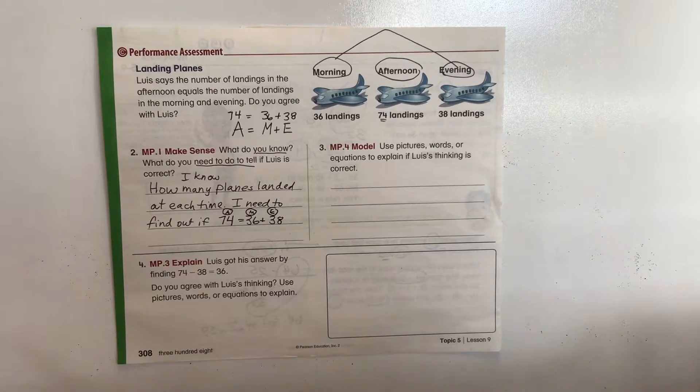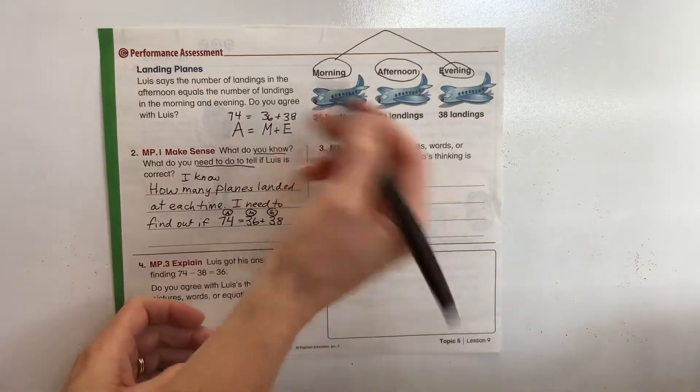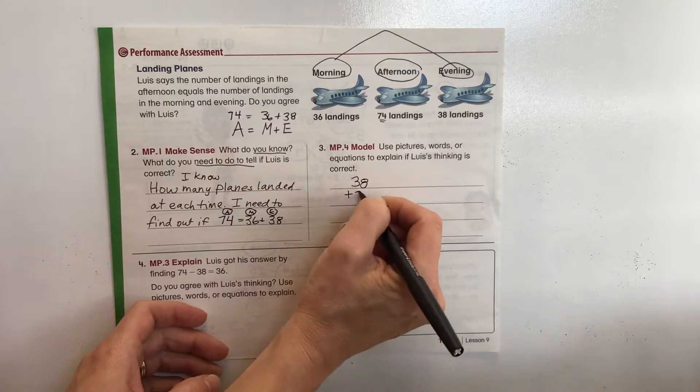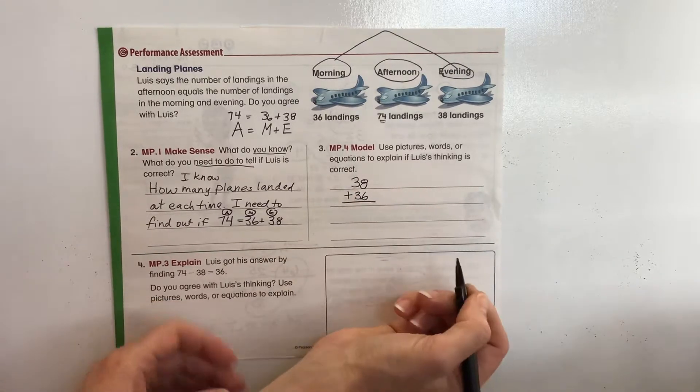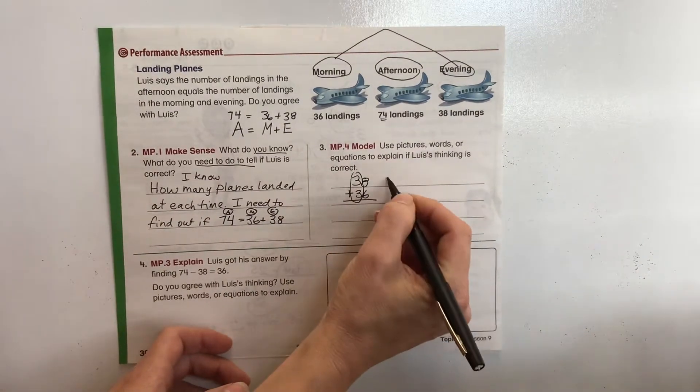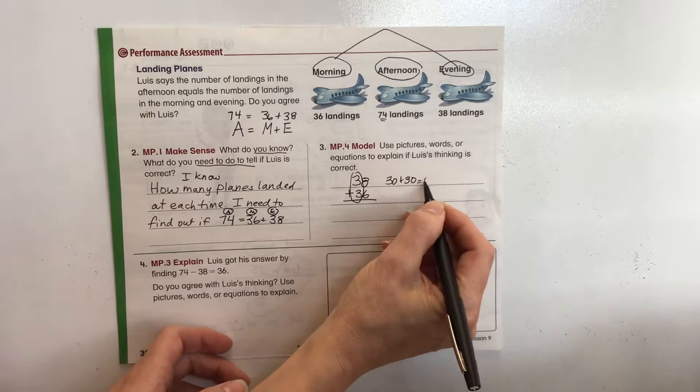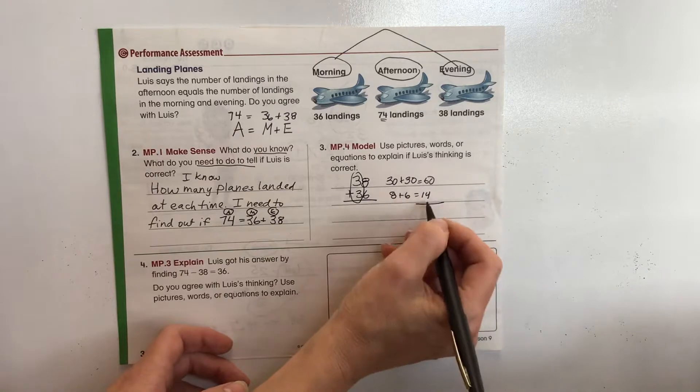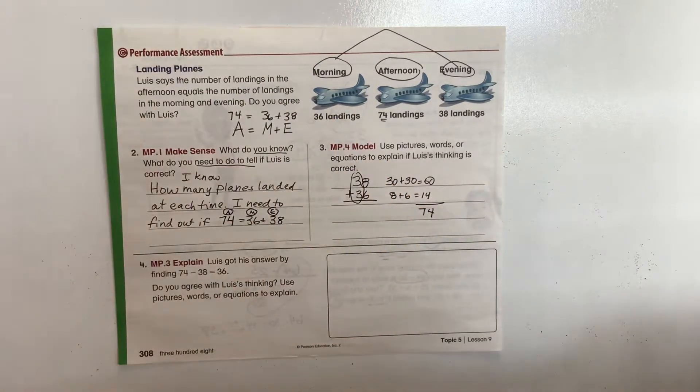So now it says, use pictures, words, or equations to explain if Louise's thinking is correct. So we want to see if 36 plus 38 equals 74. So we could do 38 plus 36. The students can do it any way that they'd like to. They can group 30 plus 30 equals 60, and 8 plus 6 equals 14. 60 plus 14 is 74. Whatever method they would like to solve. So it is correct.